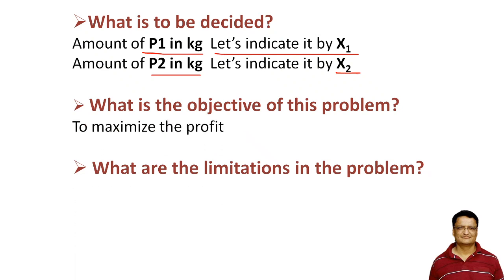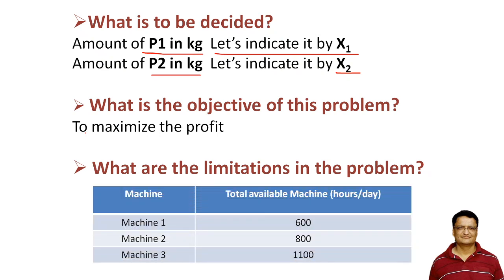What is the objective of this problem? The objective is to maximize the profit. We have to manufacture P1 and P2 in such a quantity that it gives the maximum profit. What are the limitations mentioned in this problem? The limitations are related to machine hours: machine 1 has 600 hours, machine 2 has 800 hours, and machine 3 has 1100 hours.